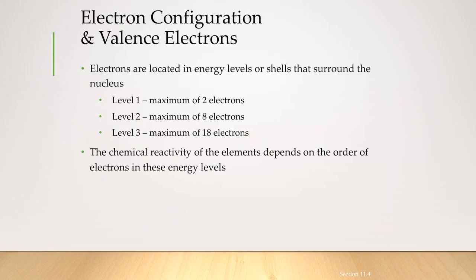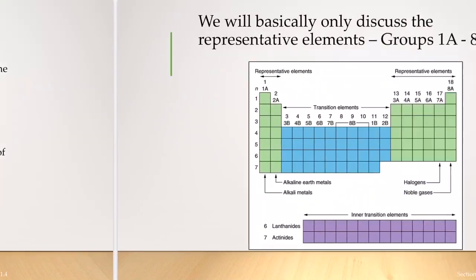But what is more important are these valence electrons. It is these valence electrons that are going to decide the properties of the different elements. The chemical reactivity of the elements depends on the order of these electrons in the different energy levels, and the valence electrons play a big role in this.